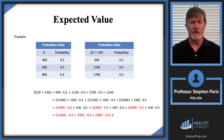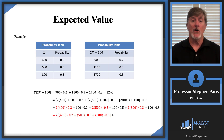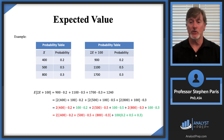Now let's expand the expression by distributing the probabilities 0.2, 0.5, and 0.3 across, then regroup. Looking at the terms in red, each has a factor of 2 that we can factor out, giving us 2 times the quantity 400 times 0.2 plus 500 times 0.5 plus 800 times 0.3.